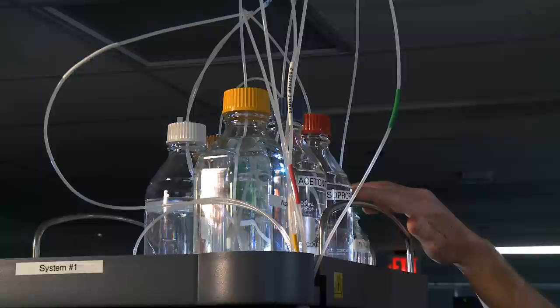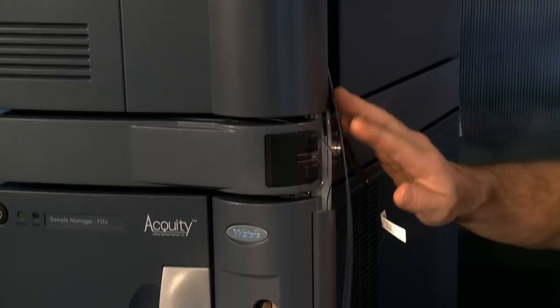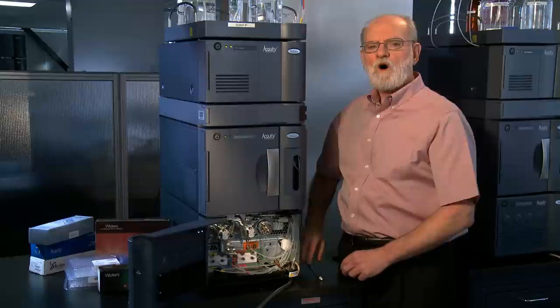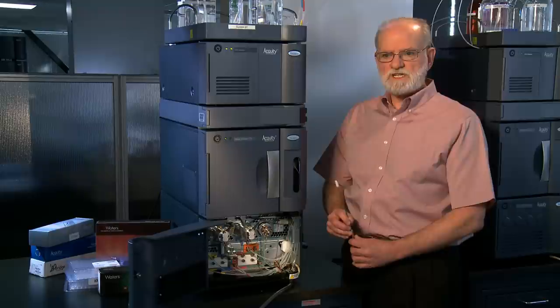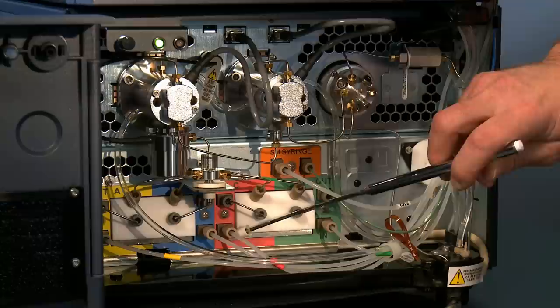The four solvents labeled A through D are placed in the tray on the top of the instrument. The solvent lines come through the channel here on the side of the instrument down into the body of the pump itself. All four solvents follow pretty much the same path through the system, so let's look at just one of them to see where it goes.